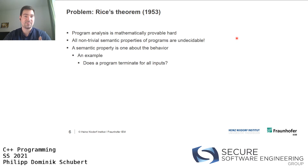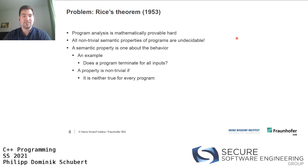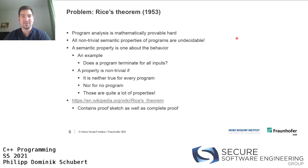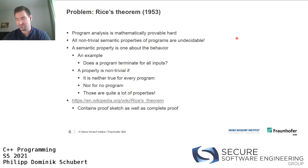A semantic property is one about the behavior of a program. An example: does a program terminate for all inputs? A property is non-trivial if it is neither true for every program nor for no program. Those non-trivial properties include quite a lot of things. You can look up Rice's Theorem on Wikipedia - there's a proof sketch that's relatively easy to follow.